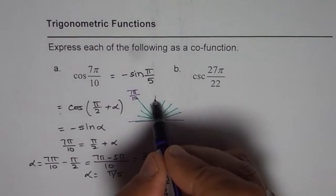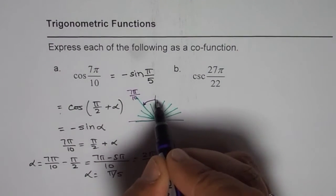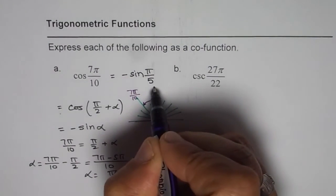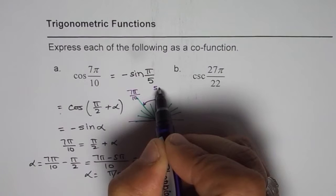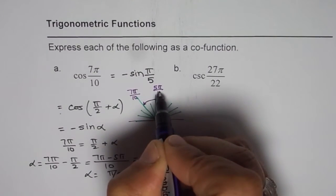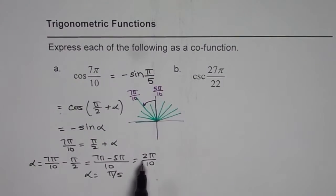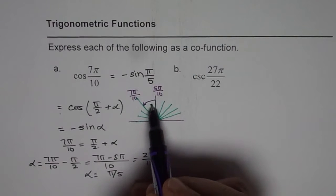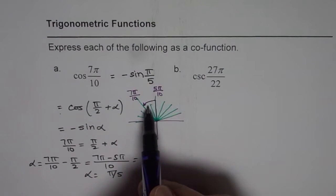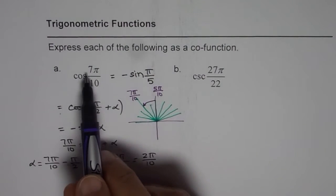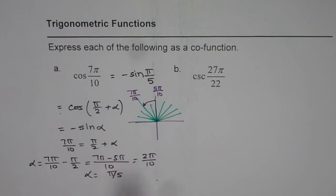Now π/2 plus, see that. So π/2 basically could be written as 5π/10. So you are left with 2π/10. So that is how you could have got a direct answer. Cos 7π/10 equals to minus sine 2π/10, and then 2π/10 simplifies to π/5. I hope you understand and appreciate this concept.